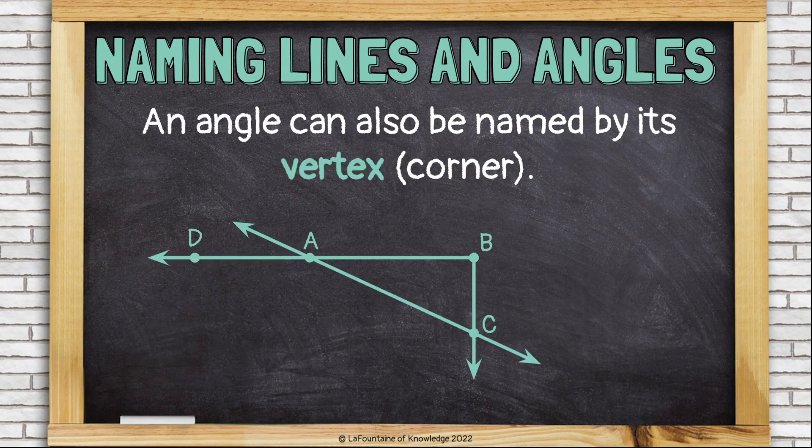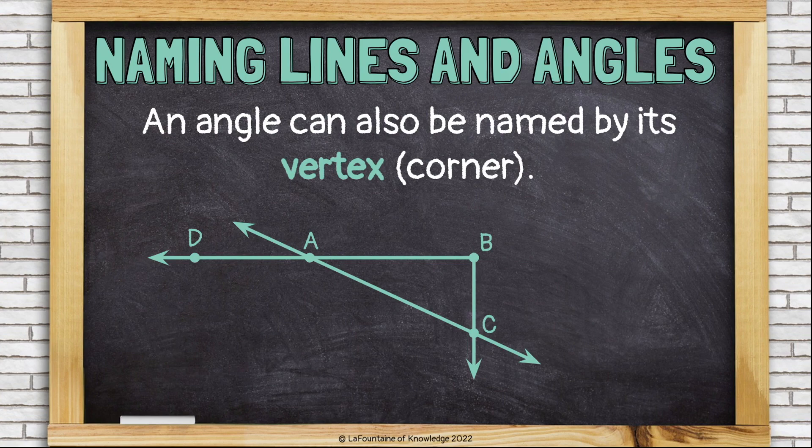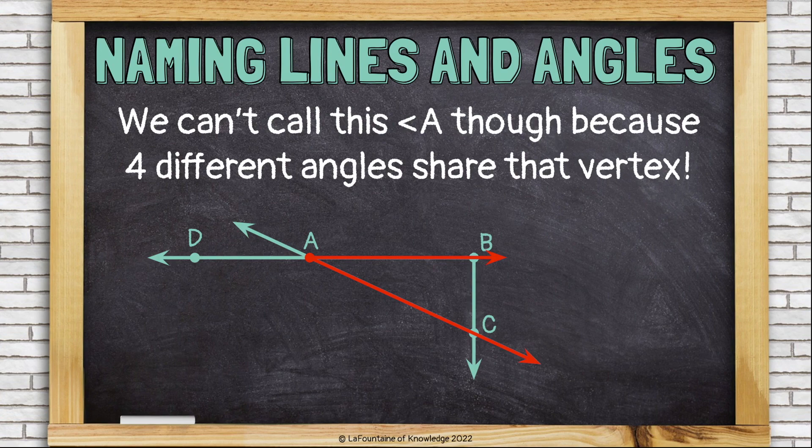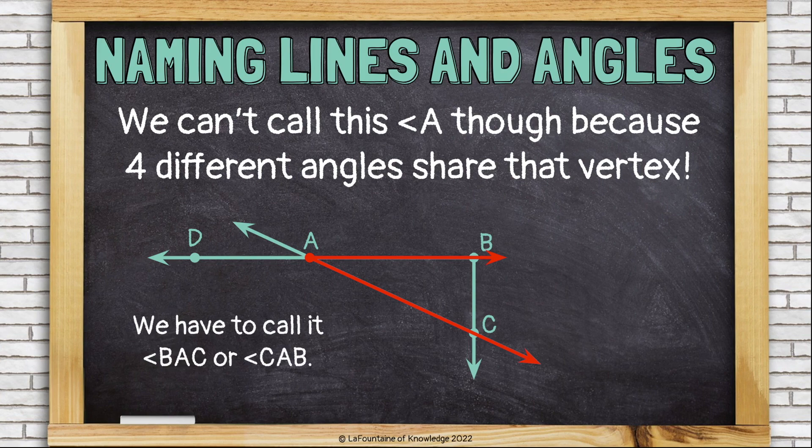An angle can also be named by its vertex, which is its corner. We can call this angle B. We can't call this angle A though, because four different angles share that vertex. We have to call it angle BAC or angle CAB.